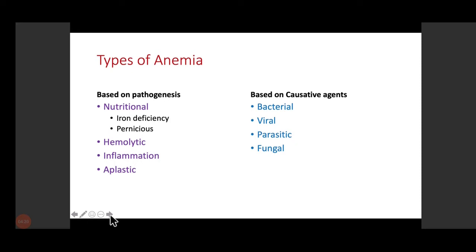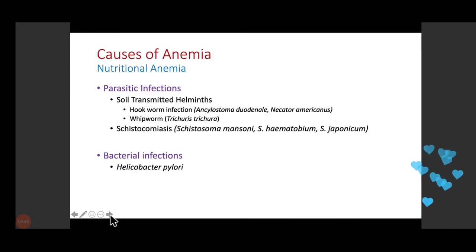Hemolytic anemia involves RBCs being rapidly destroyed in the circulation. Anemia due to inflammation involves decreased erythropoietin, non-functioning erythropoietin receptors, or damaged precursor cells. Aplastic anemia involves a bone marrow problem leading to selective RBC reduction or depression of all cell lines. Another way to classify infectious causes of anemia is by causative agents: bacterial, viral, fungal, or parasitic.